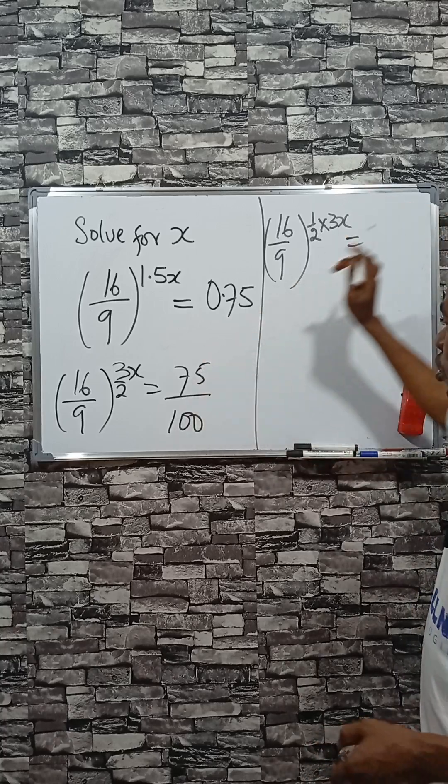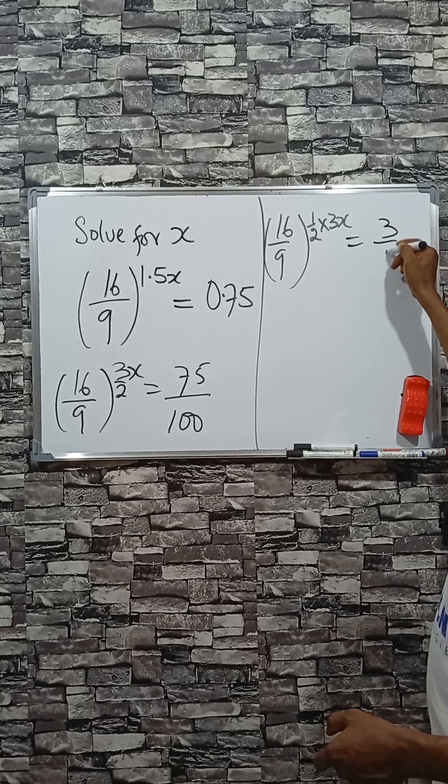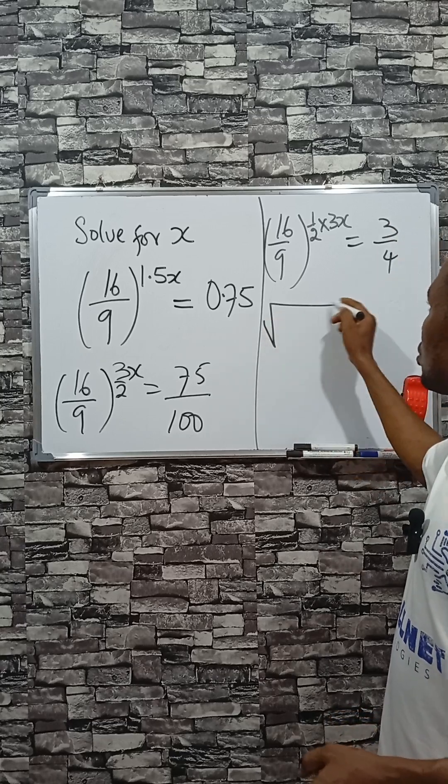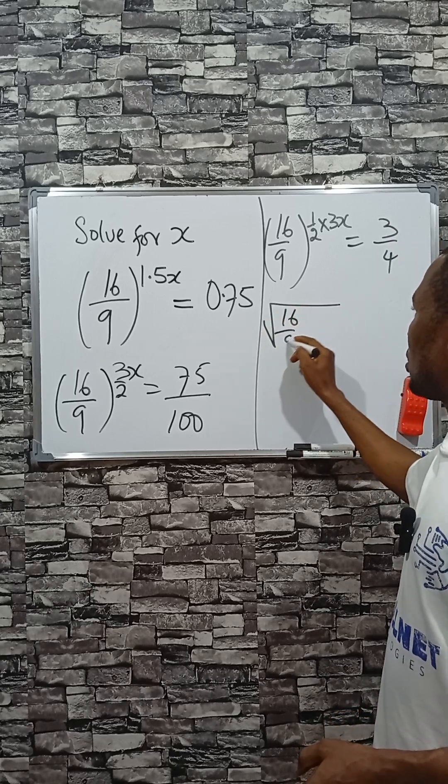You can bring this down to a lower step as 3 divided by 4. So the square root of 16 divided by 9.